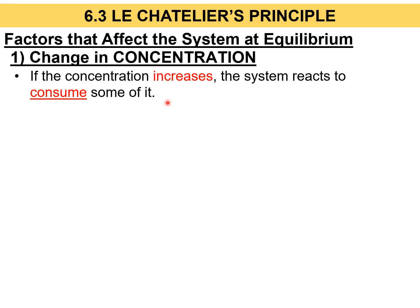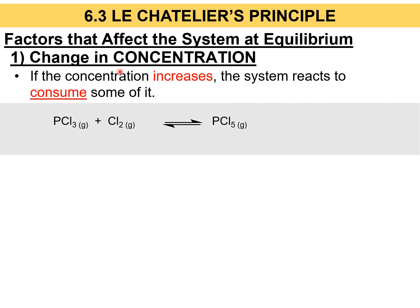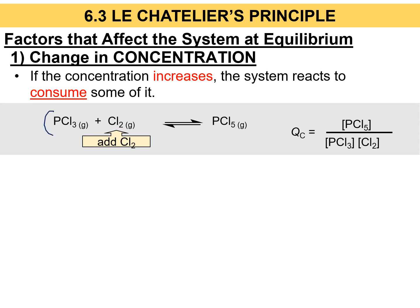I'd like to discuss the first factor that affects the system at equilibrium, which is concentration. If you increase the concentration in the chemical system, the system reacts to consume some of it. For example, if you add more Cl2 to this chemical system, even though you add only one reactant, the entire reactant side concentration increases. To correct it, you need to reduce the concentration of the reactant, so the reaction will shift to the right. When it shifts to the right, the concentration of the reactant decreases.